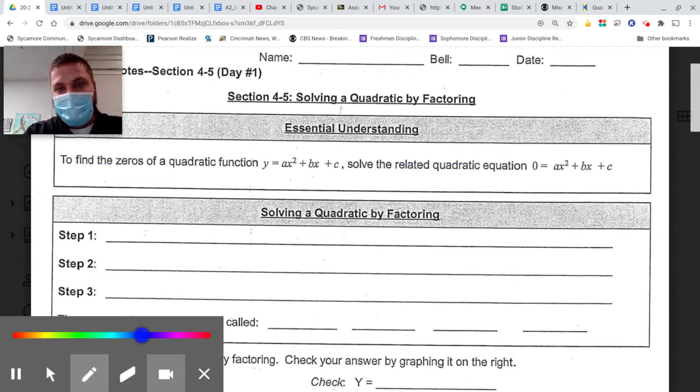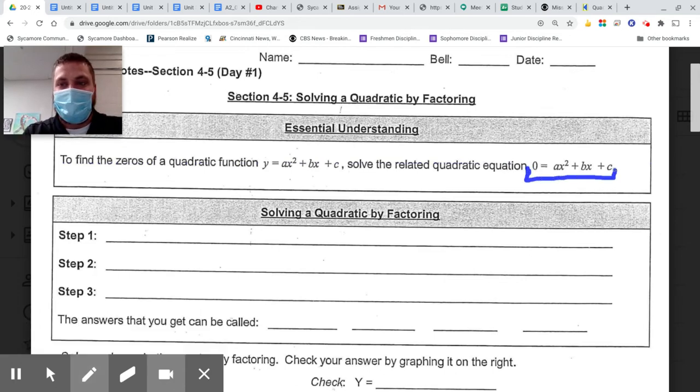This first thing in the guided notes that you can print off is basically telling you that in order to solve any quadratic, it must first say equals zero. I'm sure there will be a couple examples farther down where we'll make that happen. It's got to say ax squared plus bx plus c equals zero. If it's not, then we need to use inverse operations to get it to equal zero.